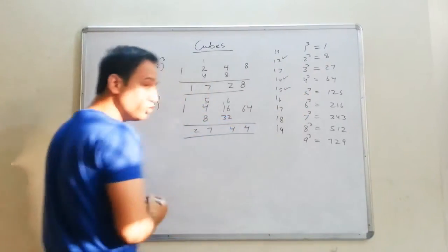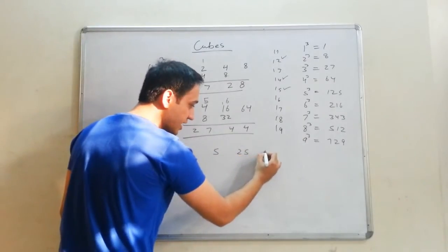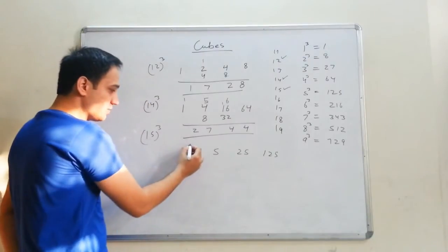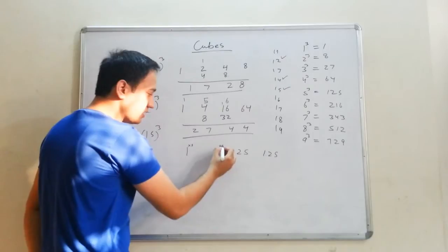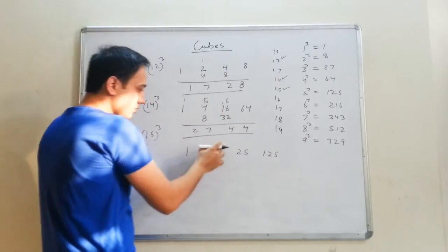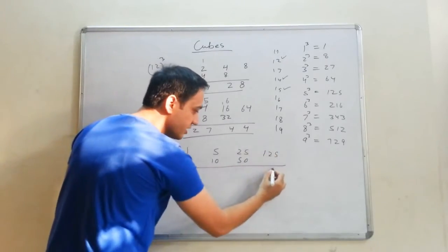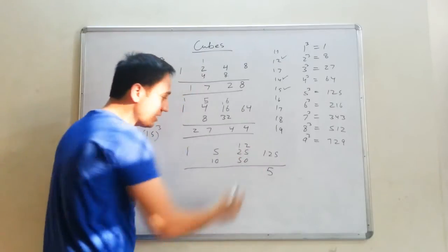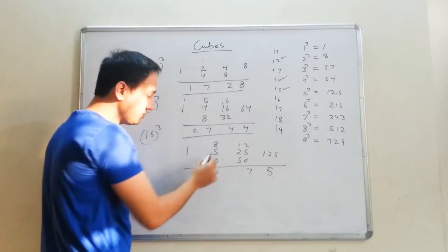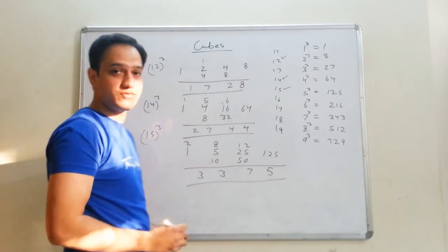Now if I have to do a cube of 15. You know what to do: 1, 5, then 25 (square of 5) and 125 (cube of 5). Or you can say: take 1, multiply by 5, again multiply by 5, again multiply by 5. Now double these digits: 10 and 50. Add: take 5, carry 1. 5 plus 3 is 8, carry 1. 8 plus 5 is 13, plus 10 is 23. Write 3, carry 2. Answer is 3, 3, 7, 5.